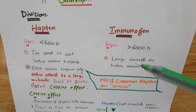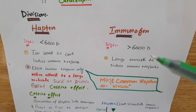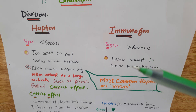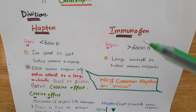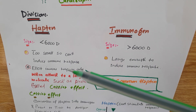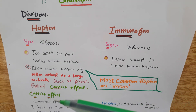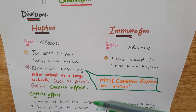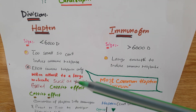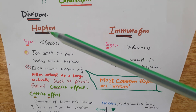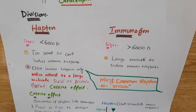Immunogens are large molecules — they are large enough to induce, to elicit, or to stimulate the immune response. If you want to convert hapten into immunogen, this hapten could bind with a carrier protein, then the size of the hapten will increase. This is how we can convert the hapten into immunogen.